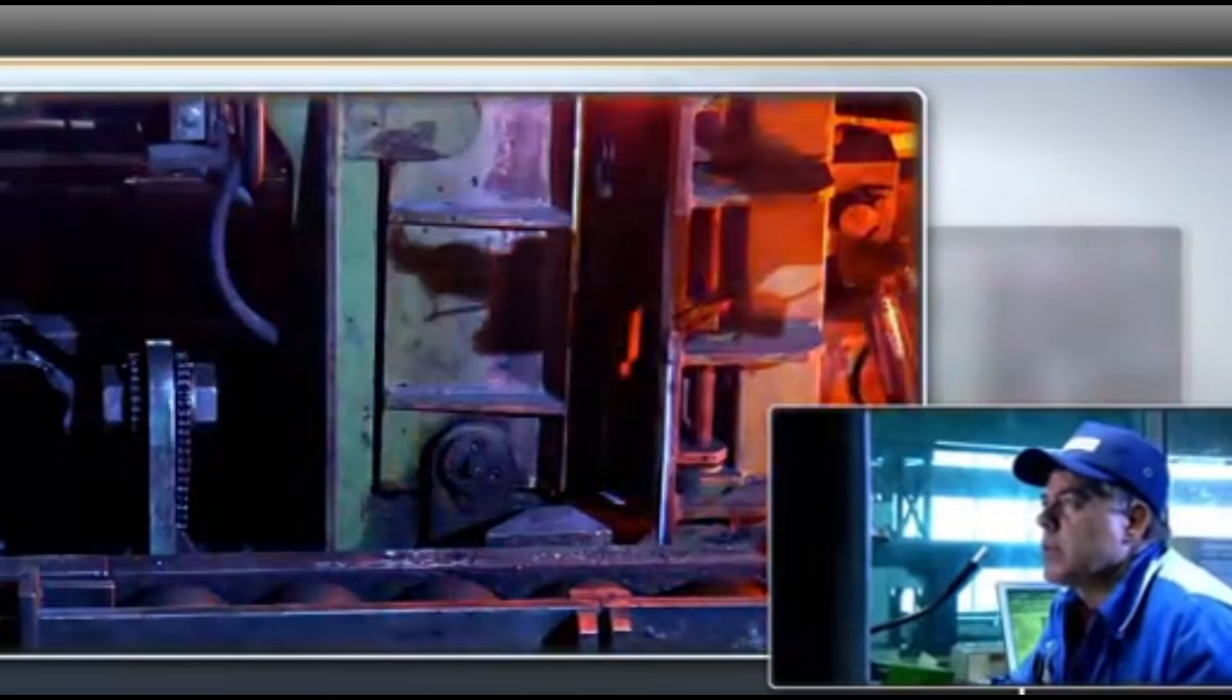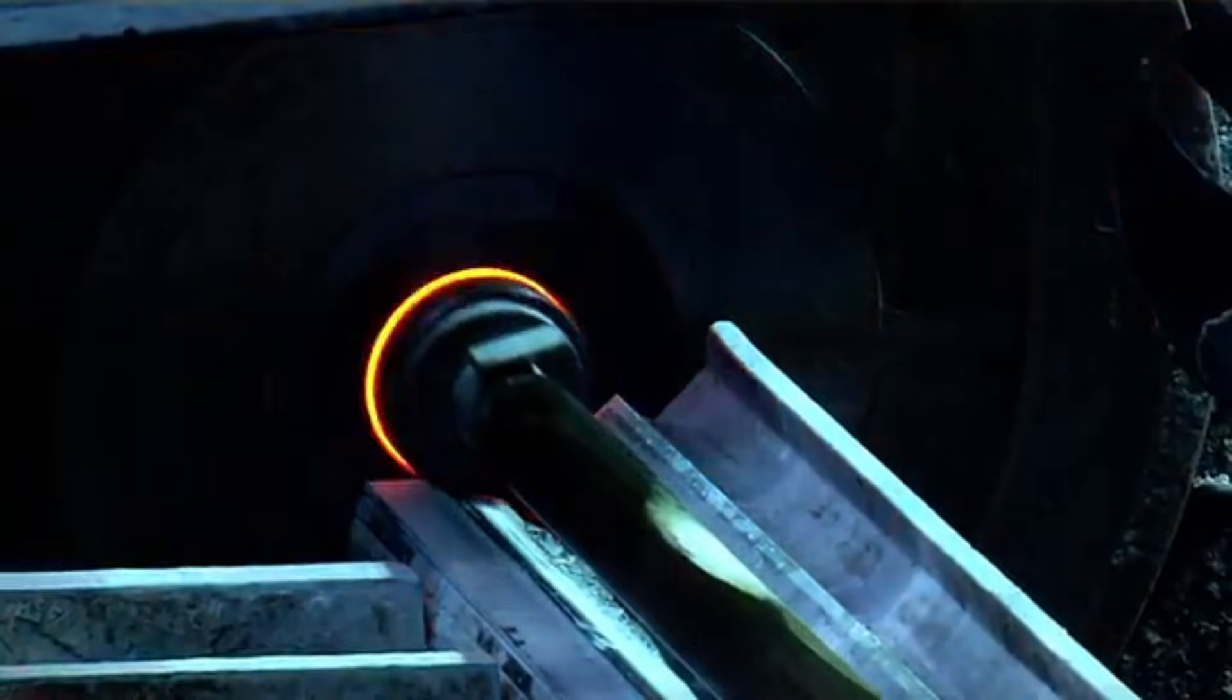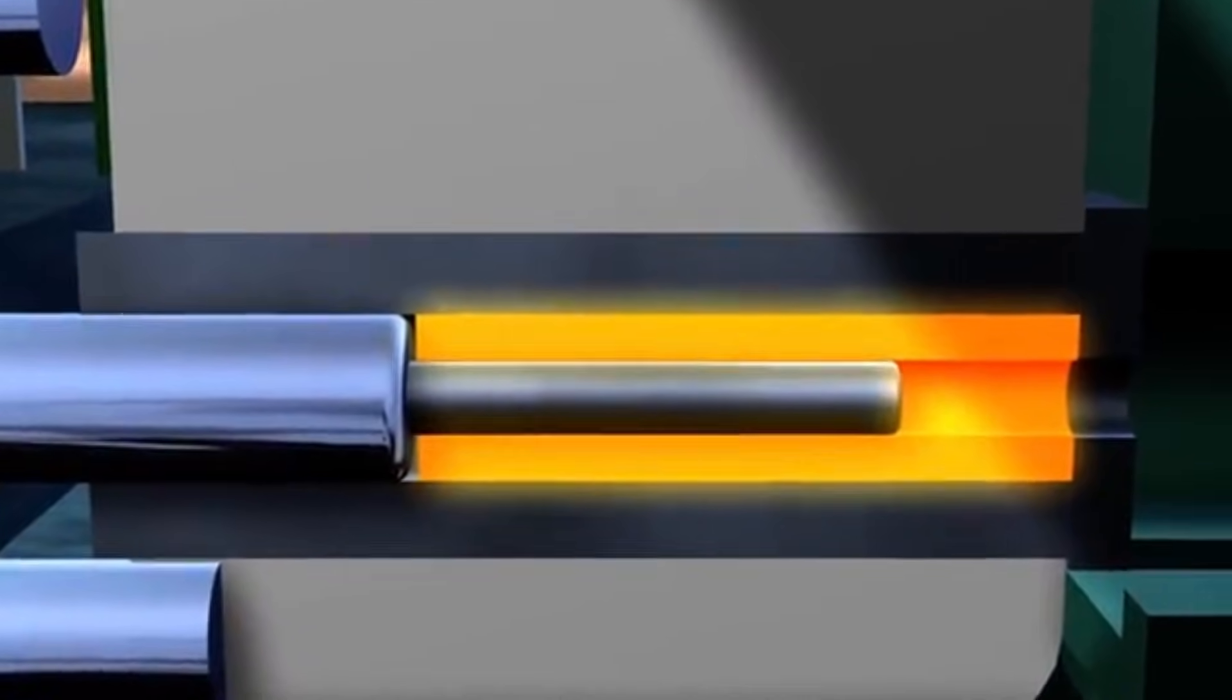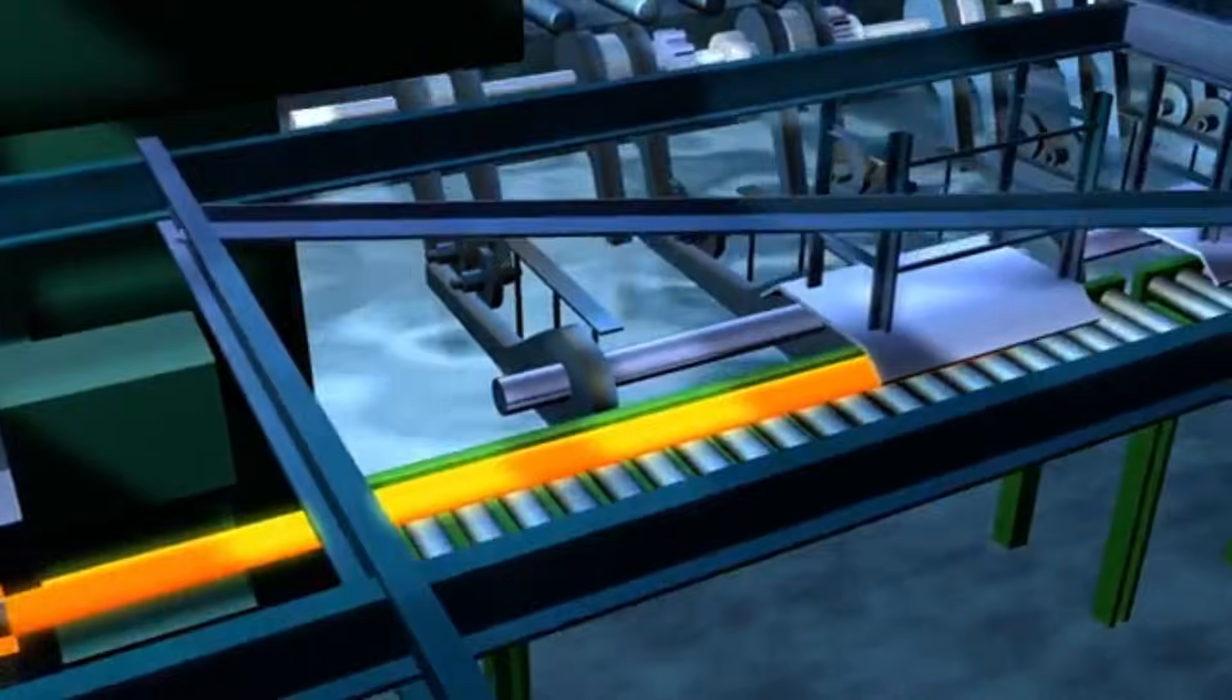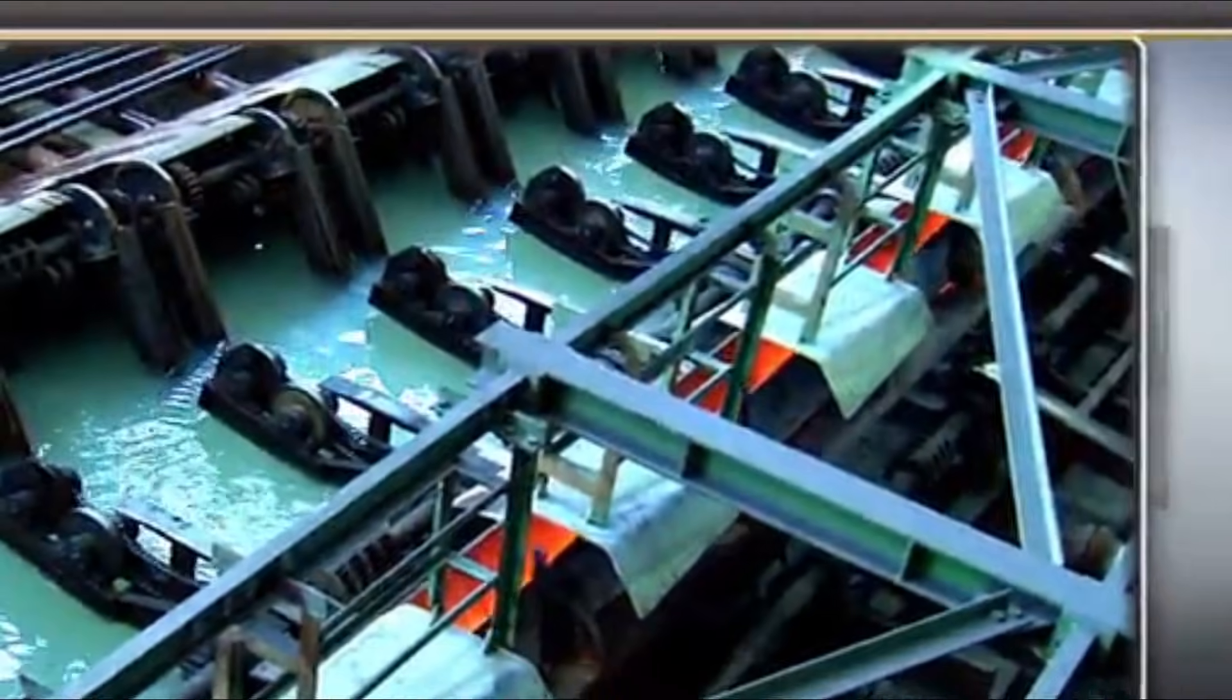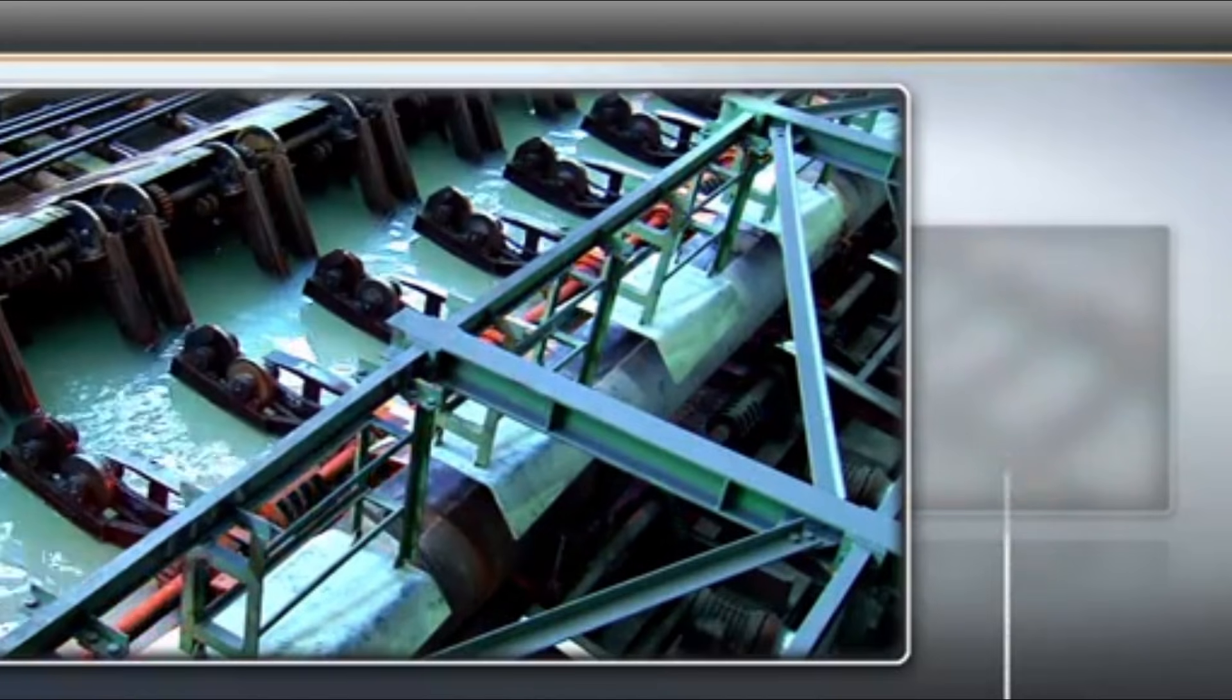The subsequent step, seamless tube extrusion, is one of the most decisive processes in tube manufacturing. Here, the heated billet is transformed into a hollow tube by forcing it through an extrusion die, which accurately defines the outer diameter, while a precisely dimensioned mandrel controls the inner diameter. Supported by advanced machinery, skilled personnel, and digital process monitoring systems, this step is executed with exceptional precision and process reliability.